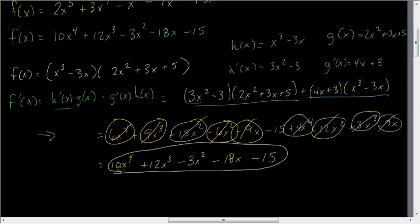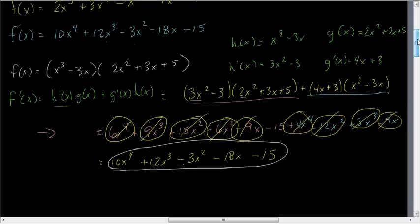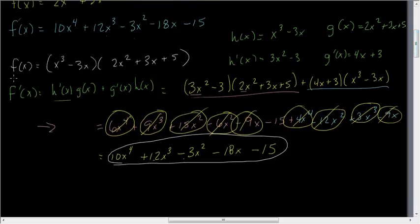10, 12, negative 3, negative 18, and negative 15. 10, 12, negative 3, negative 18, negative 15. Descending powers of x from 4 to 0. Yep. Everything's good. OK. So that's another way that you can do it to check yourself. Alright. Let's go on to the next one.